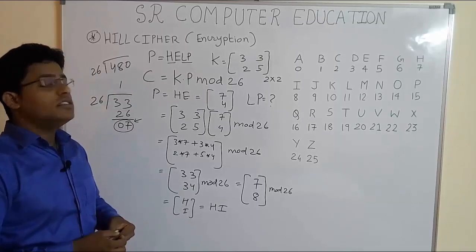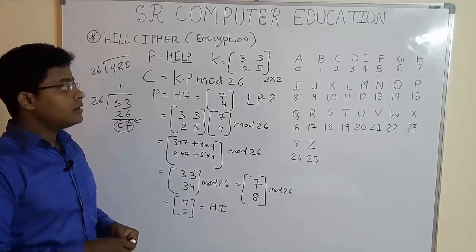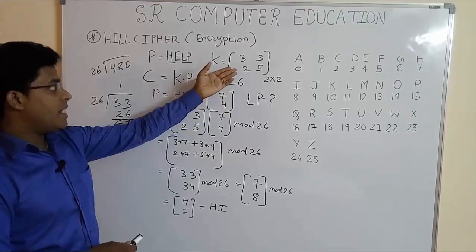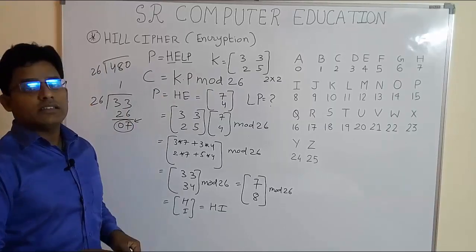So students, this is how you can do encryption using Hill cipher technique when the matrix given is 2 by 2. If the matrix given is 3 by 3, then some different method is there. I am going to upload a new video for it.